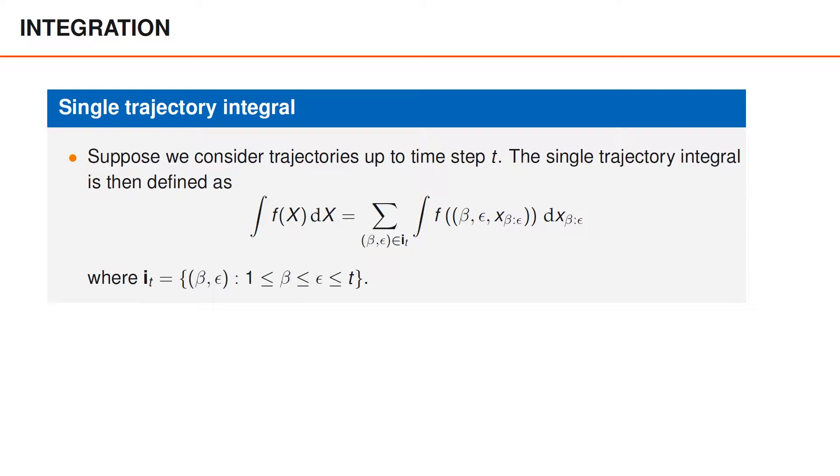For the continuous variables, the summation is an integral. For the integral-valued variables, beta and epsilon, we instead have a discrete summation over all values that they can take, where we note that both must be positive, and that epsilon cannot be smaller than beta. Also note that the dimensionality of the vector x_beta to epsilon depends on beta and epsilon.